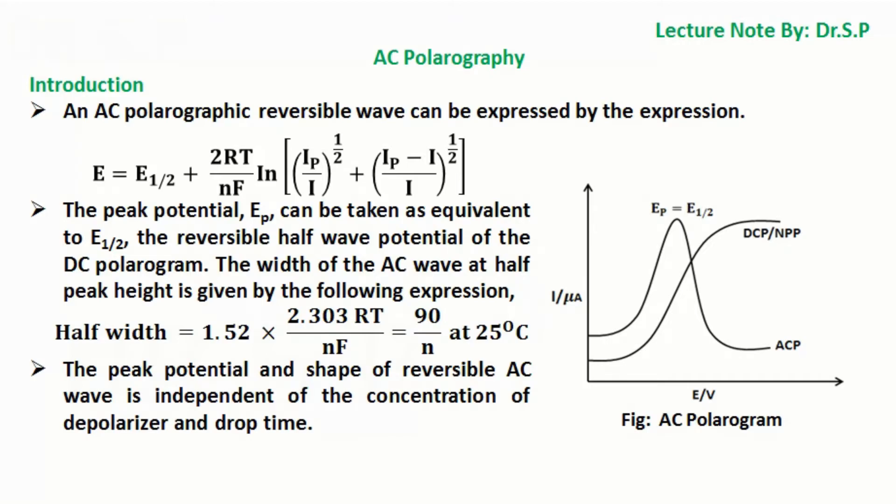The width of the AC wave at half peak height is given by the following expression: Half width = 1.52 × (2.303RT/nF) = 90/n mV at 25°C, where n is the number of electrons involved. The peak potential and shape of reversible AC wave is independent of the concentration of depolarizer and drop time.